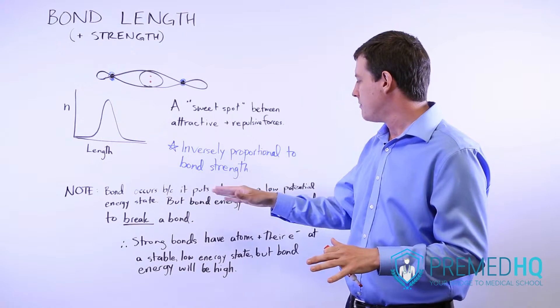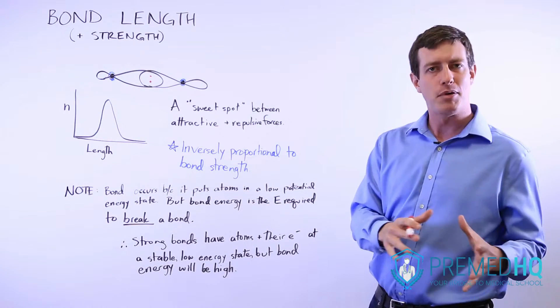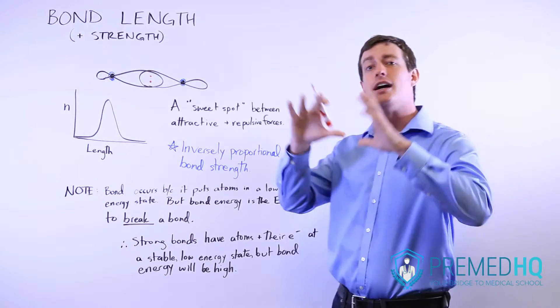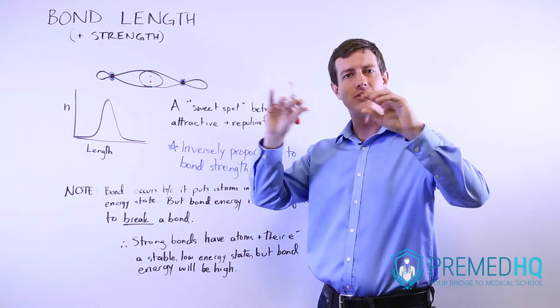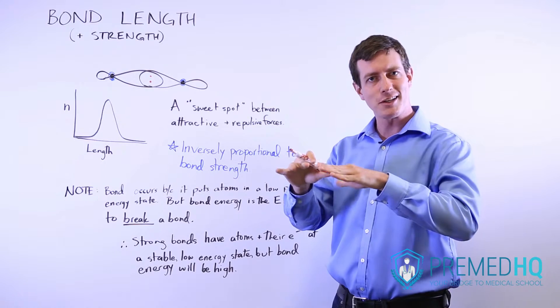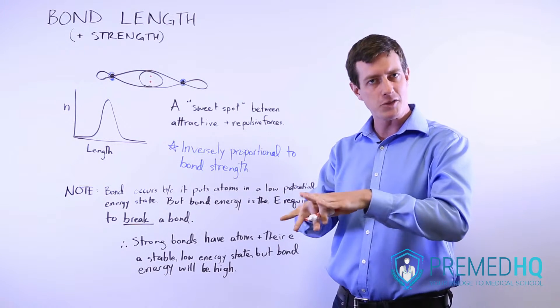Instead, the bond energy is the energy that's required to break a bond. It's the difference between the high potential energy state that the two atoms had initially and the low potential energy state that they have when they're bound together.